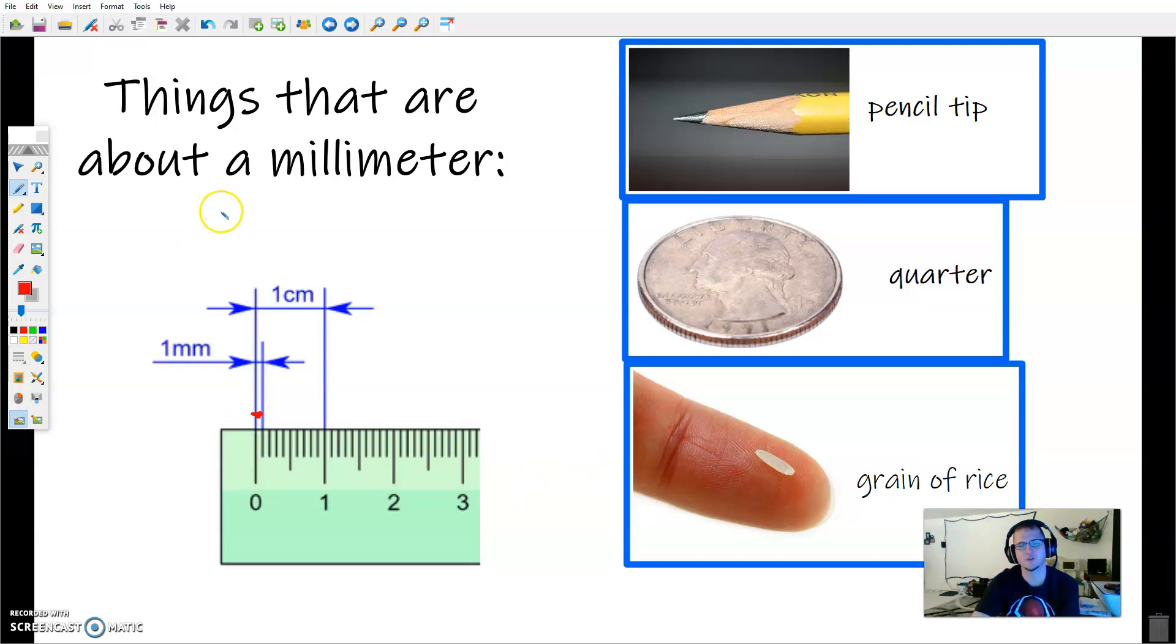So there's not a lot of things that we deal with on a day-to-day basis which are actually a millimeter. But you might measure, say, the width of a penny, because the penny is going to be about 15 millimeters. And so there are some things we would. But if you're talking about just one millimeter, that's such a small little size, that grain of rice, the width of the quarter, or the tip of the pencil there. Keep that in mind.